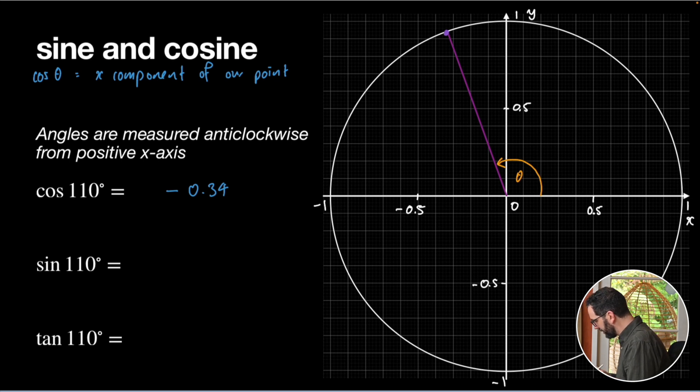If I do sine of 110 degrees, well, that's just the y-component. So, again, I can just work out sine of my angle theta, sine of 110 degrees, by literally reading off the y-component from my graph. So, that looks like around about 0.94 to me. So, I haven't used the calculator at all. All I've done is draw a picture and extract these values off.